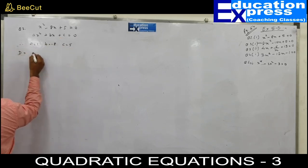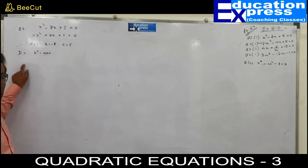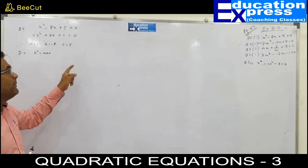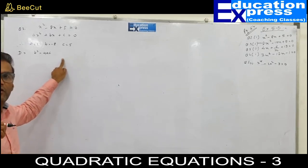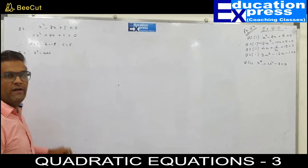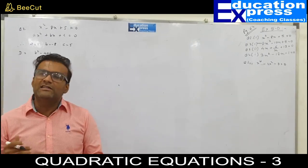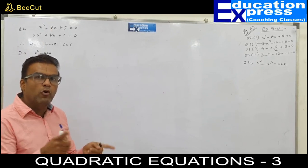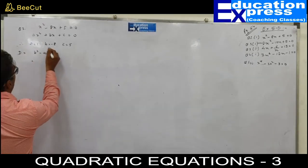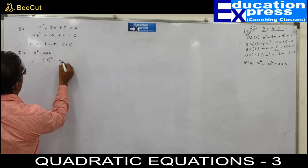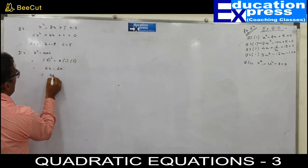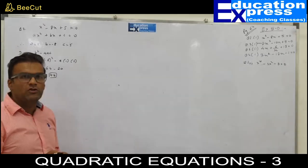Let's find out the discriminant, which is b squared minus 4ac. This is the normal procedure we have been doing for the last 15 sums. By now you know how to find the value of a, b, and c, and the discriminant. So b squared: minus 8 squared minus 4ac gives us 64 minus 20, that is 44. Not a very pleasing number because 44 is not a perfect square.